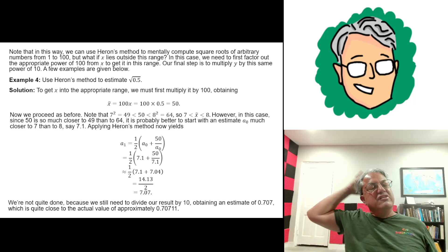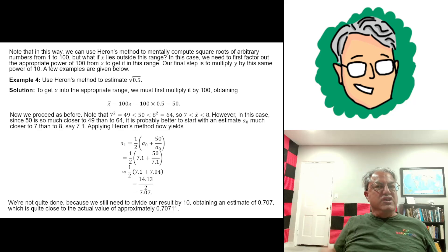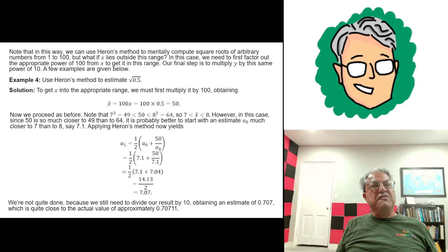This method really only works if you're taking a square root of a number between 1 and 100. What if you're outside of that range? Well, then you just have to get it into that range by multiplying or dividing by the appropriate power of 100.